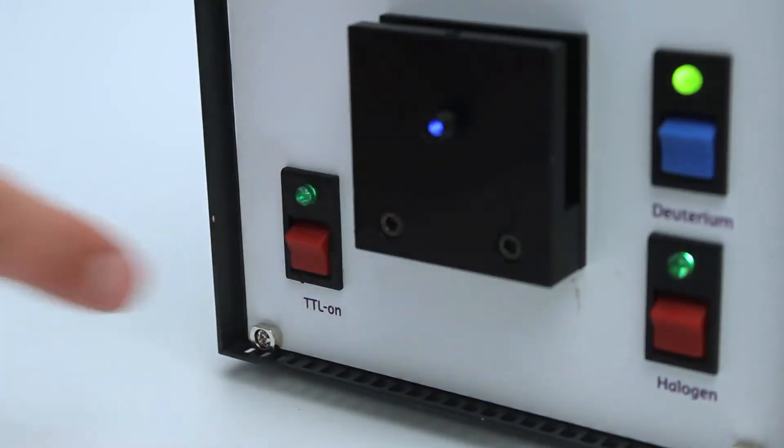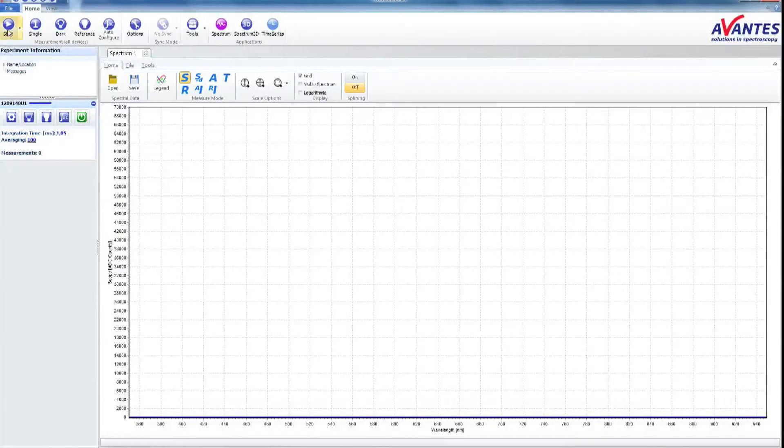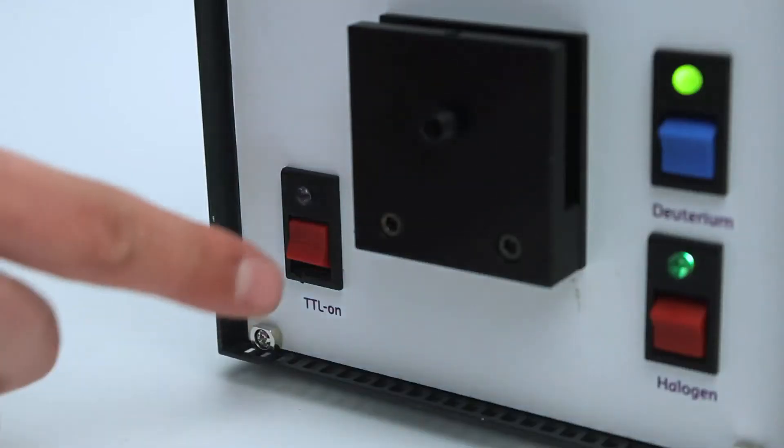Open the shutter and start up Avasoft 8. To start a measurement, click Start in the upper left corner. Click the Auto Configure button to calculate the best possible intensity and number of averages. Now open the shutter.